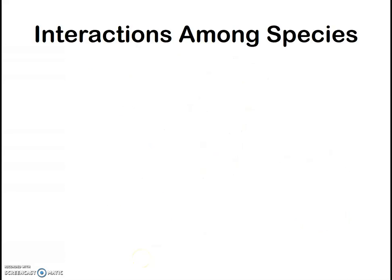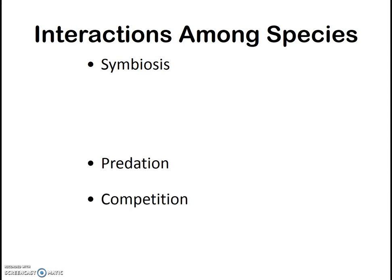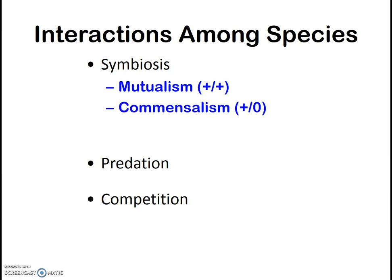One final topic in this clip: your book went into some detail about the interactions among the different species in the Everglades ecosystem. You should have a good handle on symbiosis, predation, and competition, and be able to give good examples of each as well as their definitions. For symbiotic relationships, remember there are three different types: mutualism, where both species benefit; commensalism, where one benefits and the other is seemingly unaffected; and parasitism, where one species benefits and the other is adversely affected. Be sure you're able to define all of these terms and give good examples from the Everglades ecosystem as well as examples from other ecosystems.